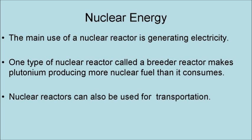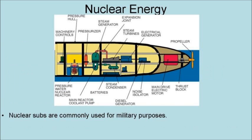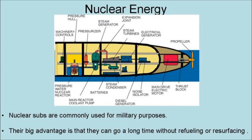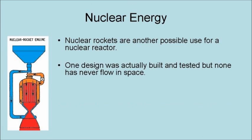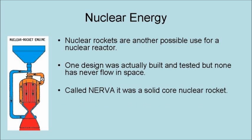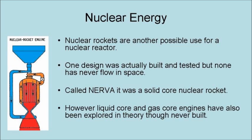Nuclear reactors can also be used for transportation. Nuclear submarines are commonly used for military purposes. Their big advantage is that they can go a long time without refueling or even resurfacing. Nuclear rockets are another possible use of a nuclear reactor. One design was actually built and tested in 1964, but none has ever flown in space. Called NERVA, it was a solid core nuclear rocket. However, liquid core and gas core engines have also been explored in theory, though never built.